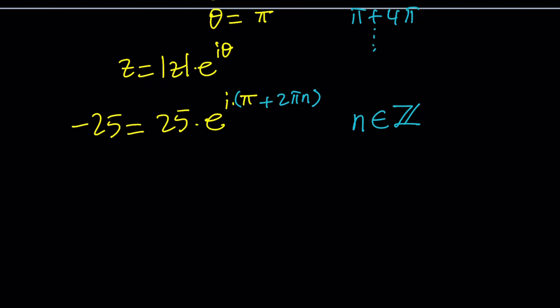So we can go ahead and rearrange this a little bit and write it as 25 times e to the power. Now, 2 n plus 1, you can factor out a pi and write this as an odd multiple of pi i, because odd multiples of pi is basically going to bring you to the same point, pi, 3 pi, 5 pi, 7 pi. They're all equivalent to pi radians. So this is how we can write negative 25 in polar form, and this is what we're going to substitute into our equation.